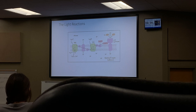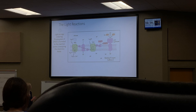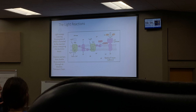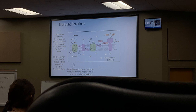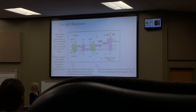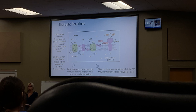Step by step: first, light energy enters photosystem 2, is funneled to the reaction center, and energizes the electrons. They go up in energy. Then electron carriers shuttle these electrons through an electron transport chain — proteins shuttling electrons along — and as they move through the chain, their energy helps pump protons into the lumen of the thylakoid. When they reach the end, they're transferred to photosystem 1.